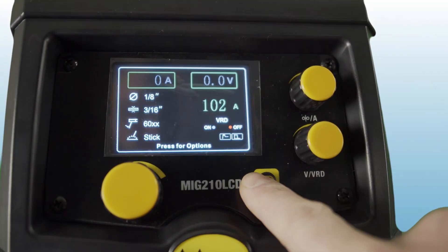Now that we have our stinger and our ground clamp connected and we've gone through our menu and set the machine up for stick we're ready to get started welding. Stay tuned for the stick welding video on the MIG 210 LCD.